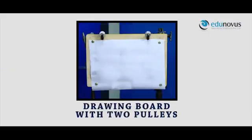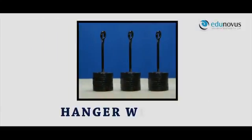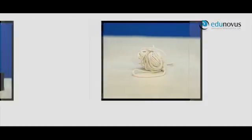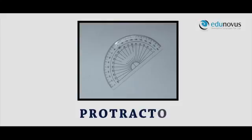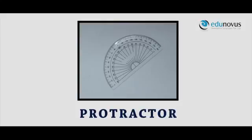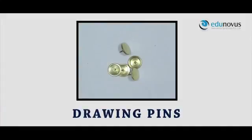Apparatus: Drawing board with two fixed pulleys, three sets of hanger weights, twine thread, protractor, set squares and drawing pins.